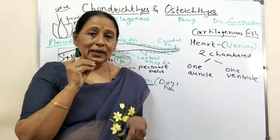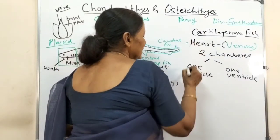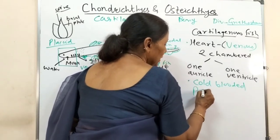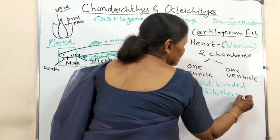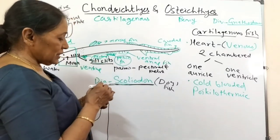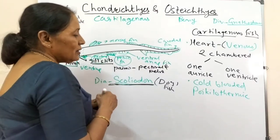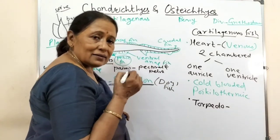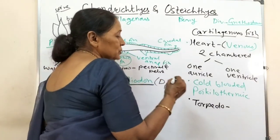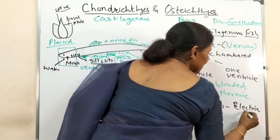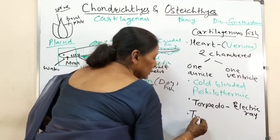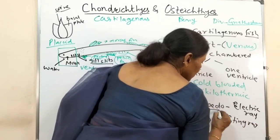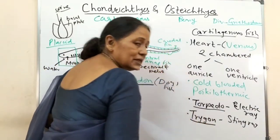They are cold-blooded; the scientific word for it is poikilothermic. Some examples of cartilaginous fishes: Torpedo, which can give an electric shock of 30 to 50 volts - it is called the electric ray. Trigon is called the sting ray - it stings.